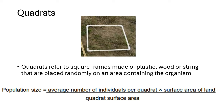The second method of indirect counting is known as the quadrate method. Quadrates are quite simple to understand — they are also an indirect counting technique because you are estimating, not directly counting how many species are in a population. Quadrates refer to square frames made of plastic, wood, or string. Those frames are placed randomly anywhere in an area containing the organism — for example, in an area where you want to count the number of ants.